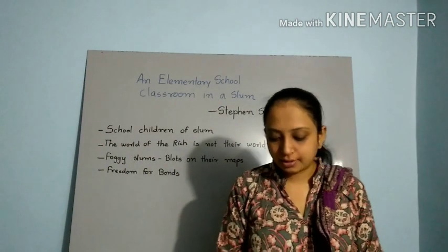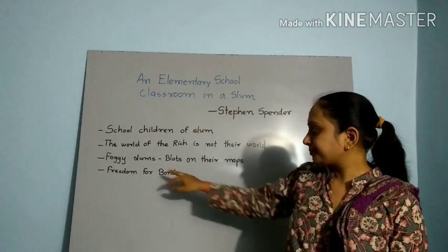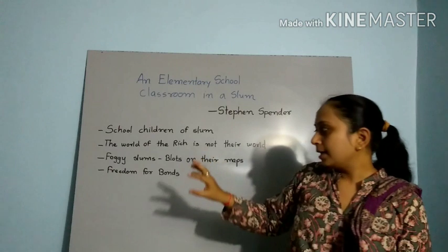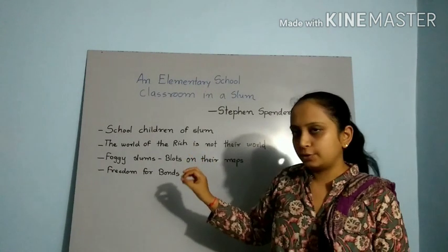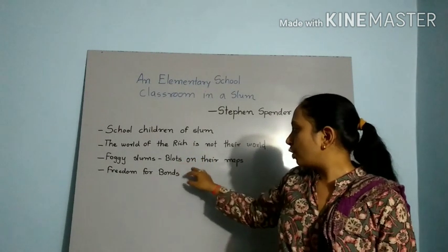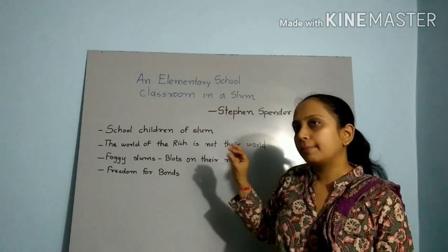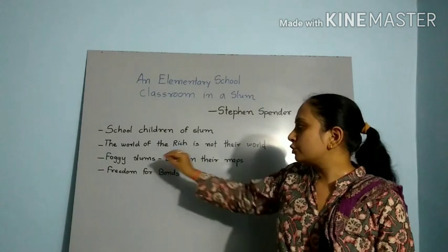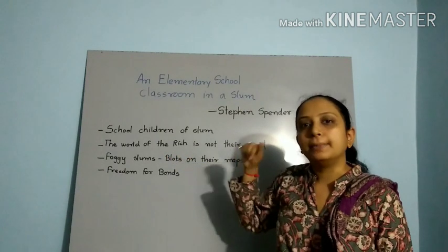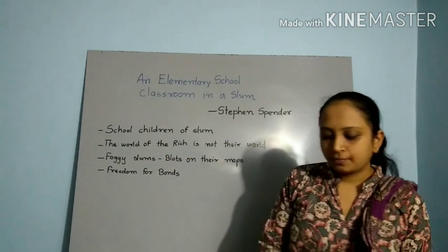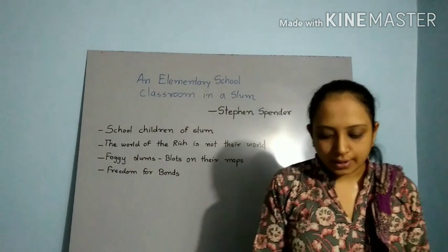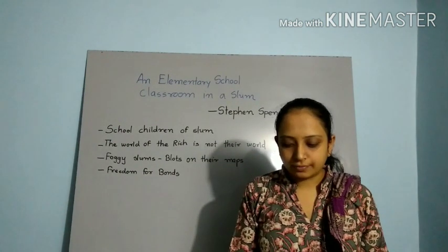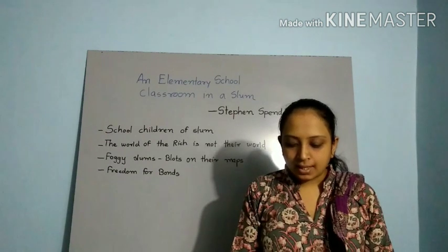Explanation of the third stanza: Foggy slums are a blot on their maps — meaning in the map of the rich, the foggy slum is like a dirty blot. What is the use of literature and Shakespeare for the children of the slum school? Nothing. Shakespeare has such a big name in literature, but it has nothing for them because they have no improvement or growth.